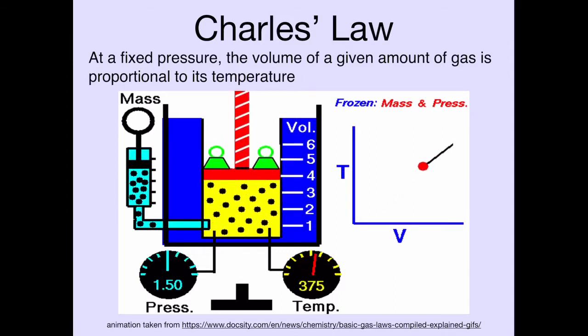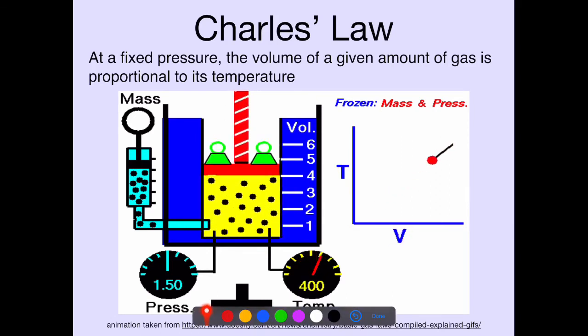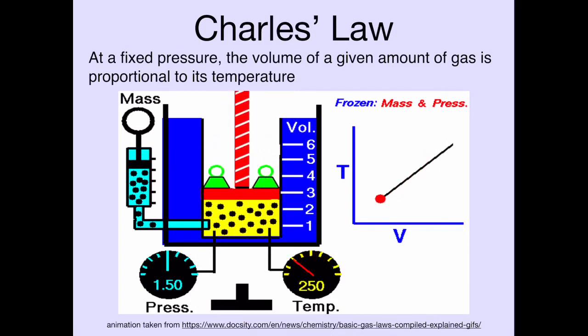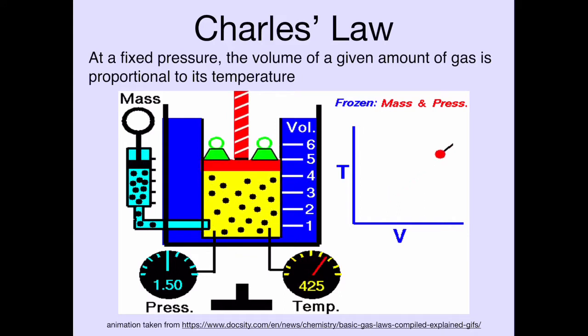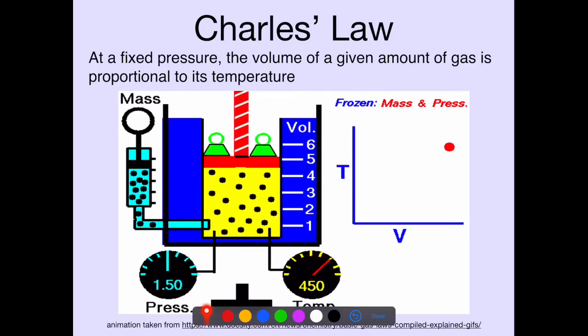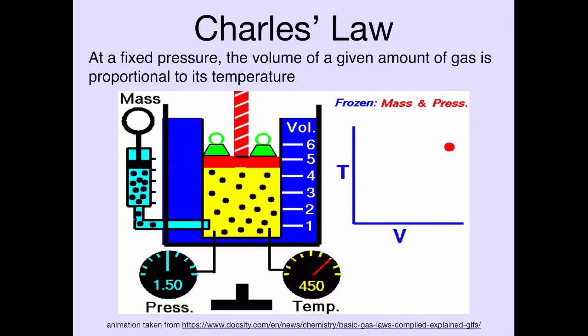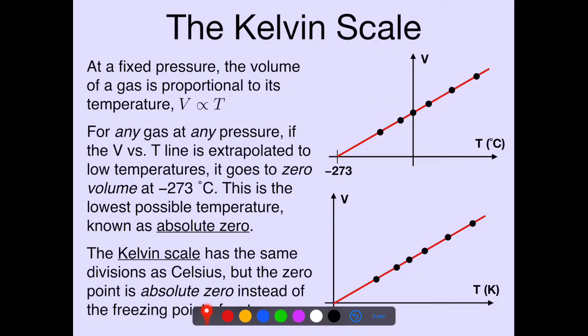According to Charles's Law, if the temperature increases, so does the volume. The higher the temperature, the more the gas pushes out on the piston and expands the volume. There's a direct proportionality between the two — if we plot temperature versus volume, it forms a straight line. If we have real data keeping pressure fixed and plot data points of volume versus temperature, those data points form a straight line. That's what Charles's Law says.